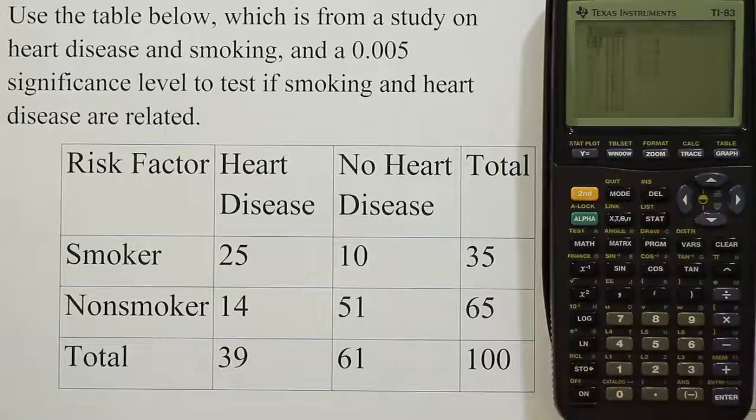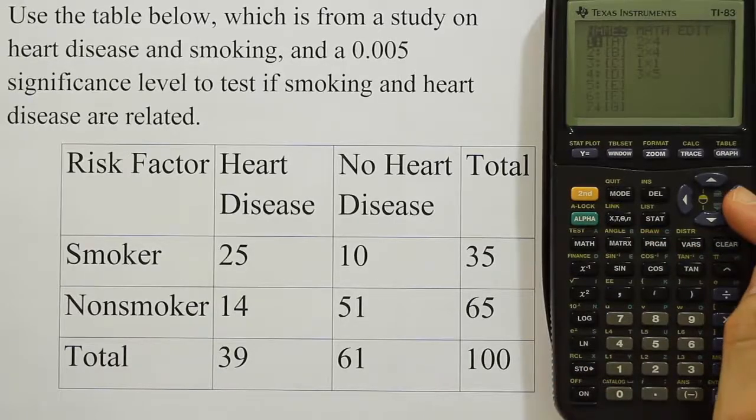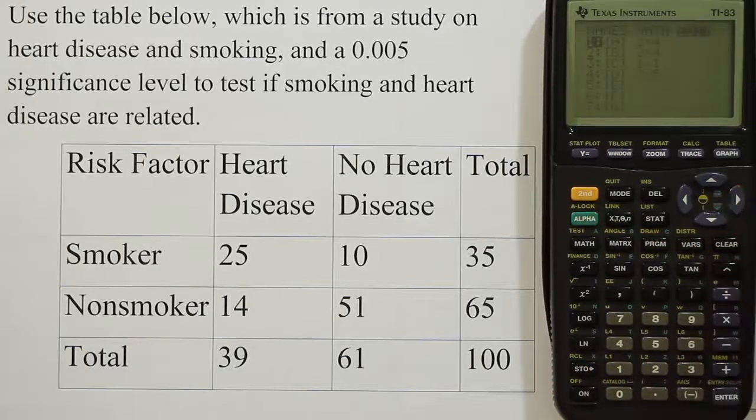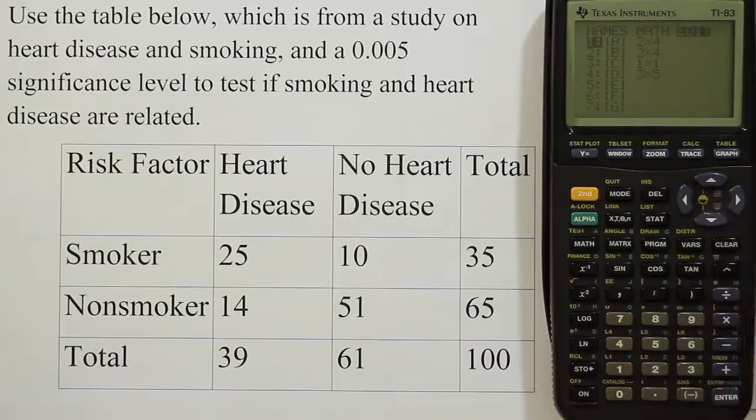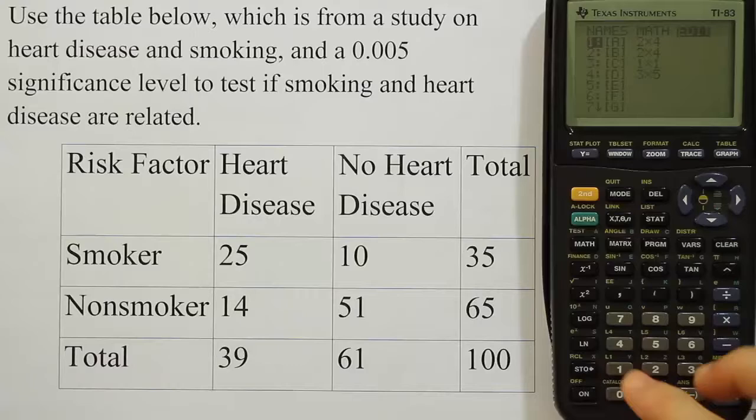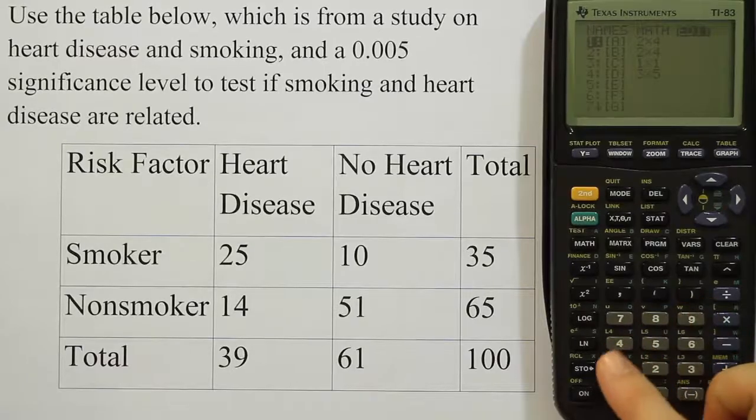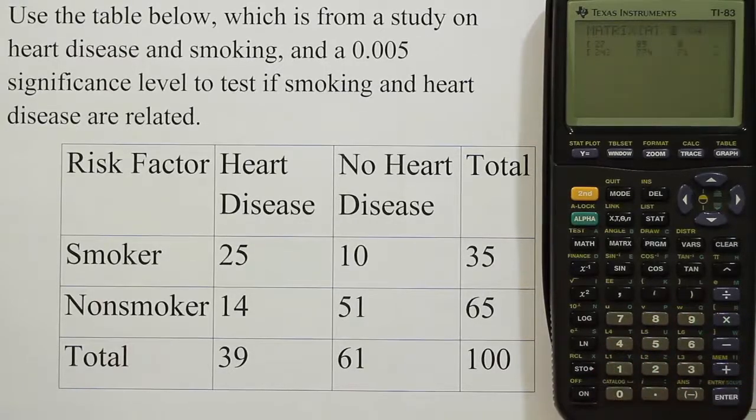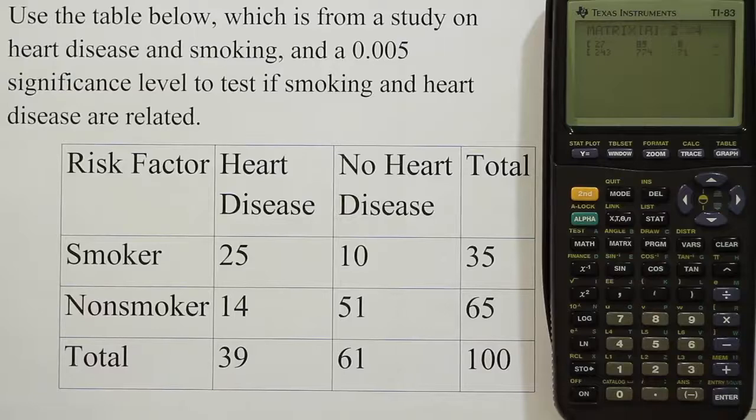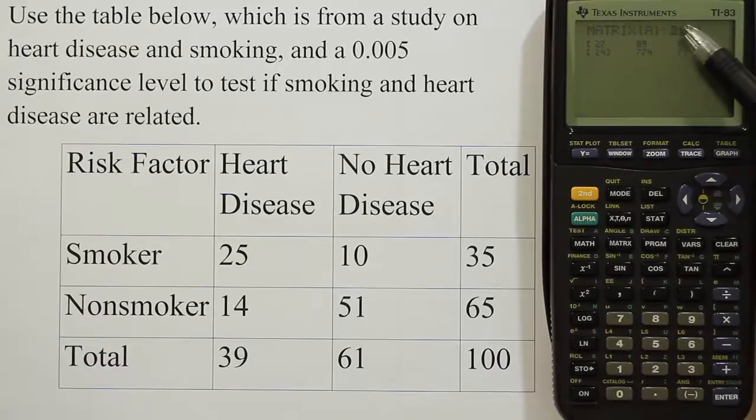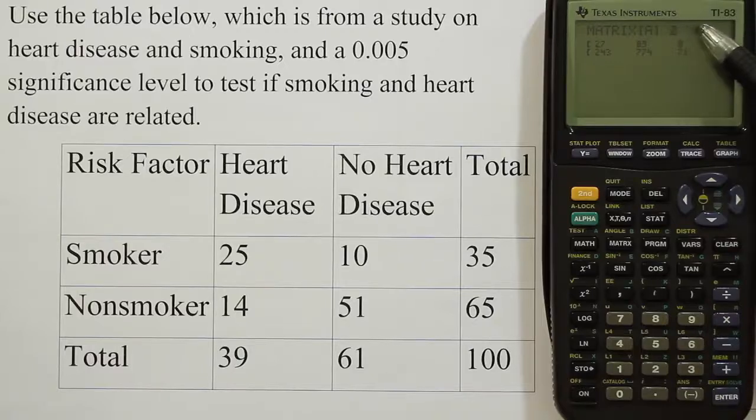Press matrix and arrow over to where it says edit. I'm going to edit matrix A, and that's important because that's where the calculator wants this first matrix to be. I'll press 1 to bring that up. When I get there it gives me matrix A and we're flashing on the basic dimensions of the matrix. It says 2 by 4 here, meaning I have two rows and four columns of data.